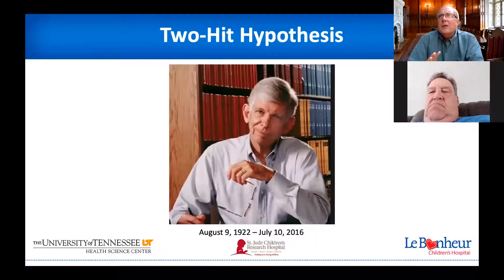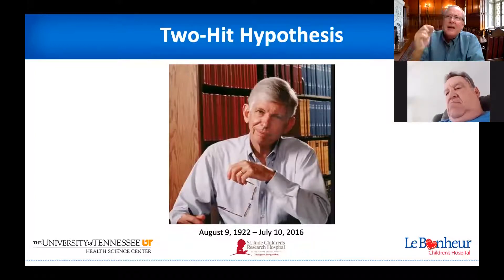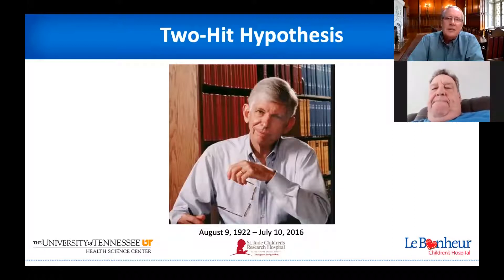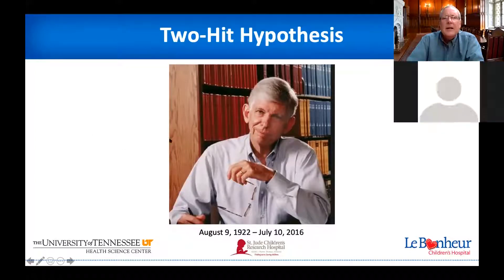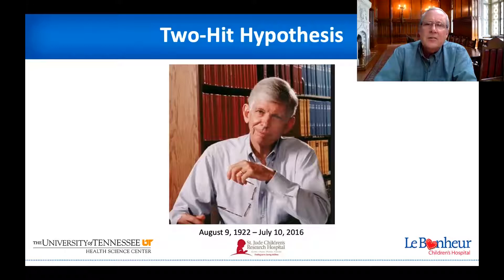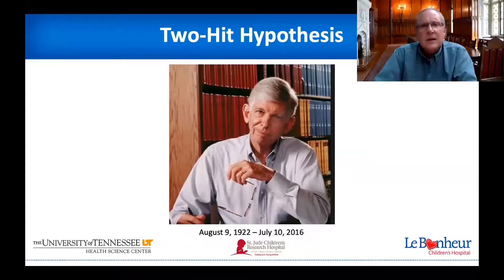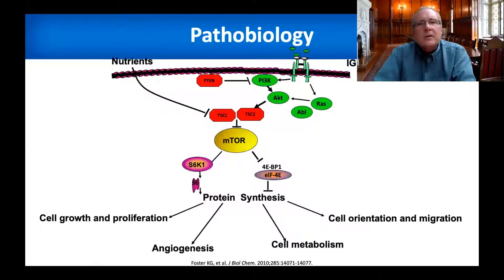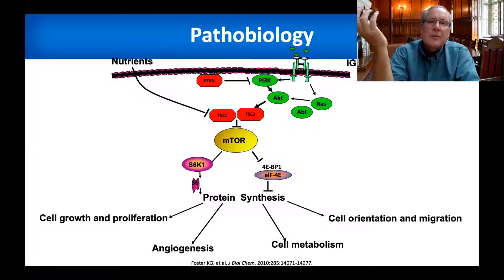Let's talk about how kidney disease develops. You've heard a lot over the years about the two-hit hypothesis, and this is really due to Alfred Knudsen, who died about four years ago. He was studying another inherited disease like tuberous sclerosis — retinoblastoma. He realized that children and adults would develop tumors in their eyes, it was inherited, and he understood that in the tumor, the good copy of the gene was disrupted. We believe this is critically important for the development of the lesions in TSC.